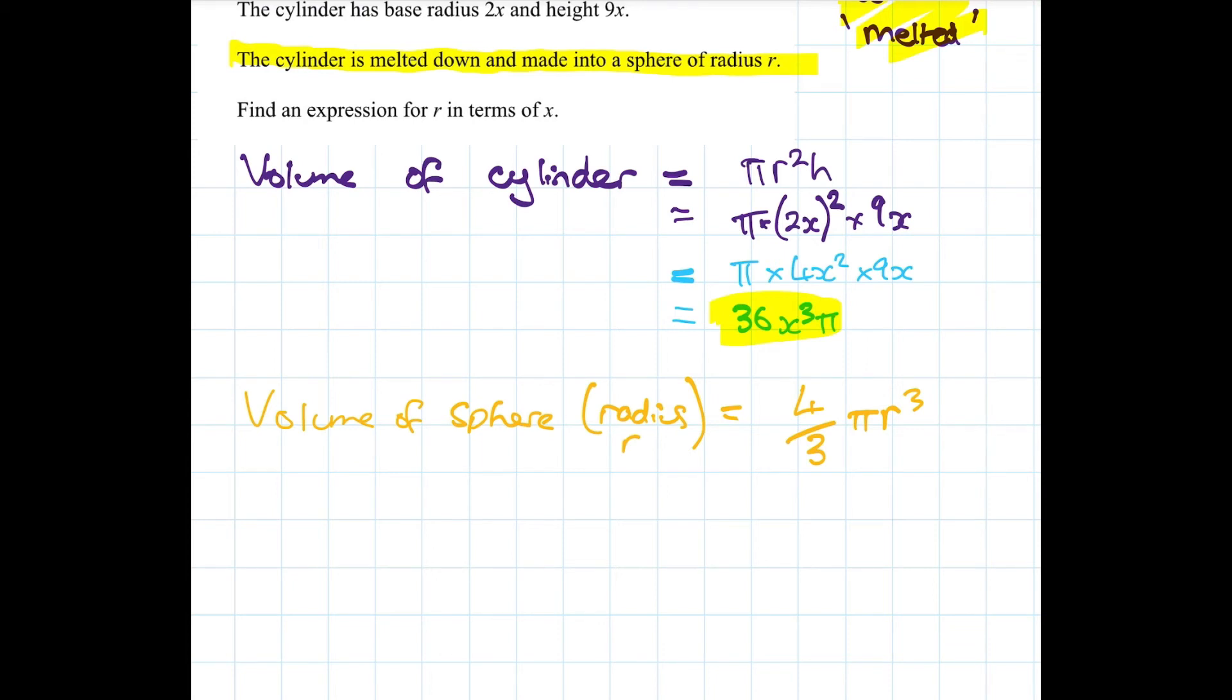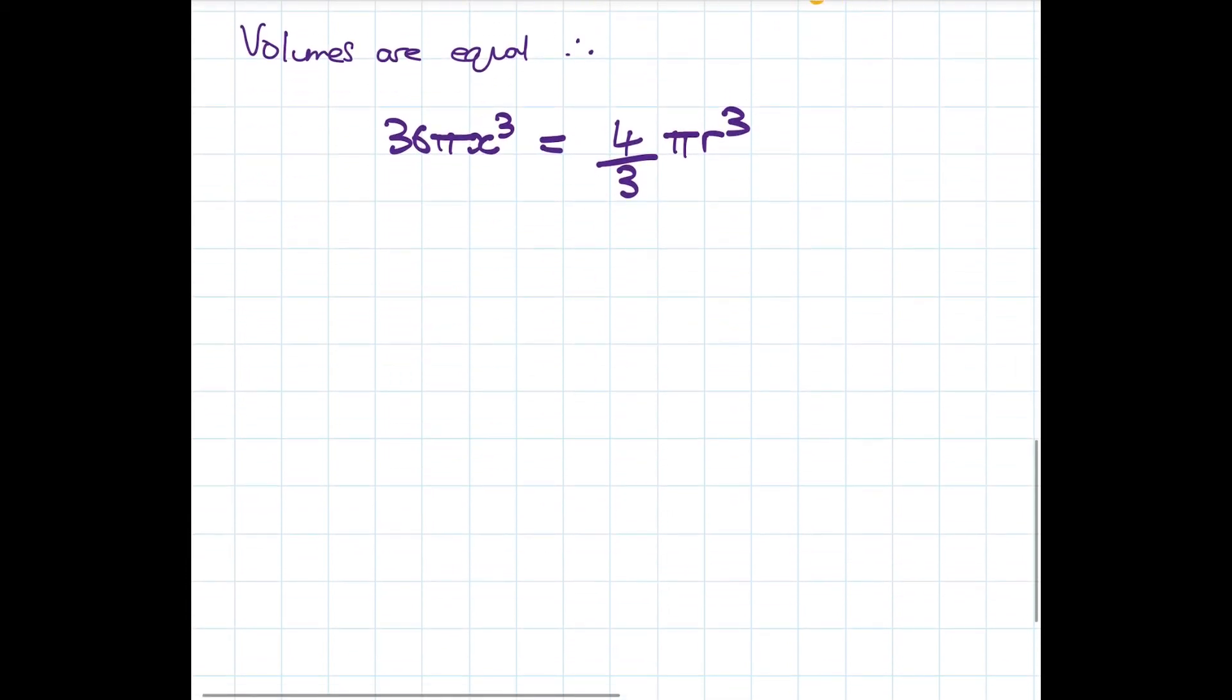So where do we go from here? We want to find r which means we need to set these to equal and rearrange. So I'd probably in the exam probably say volumes are equal. So therefore 36πx³ equals 4/3πr³. Okay you can see the π's are going to cancel and what are we going to get then?